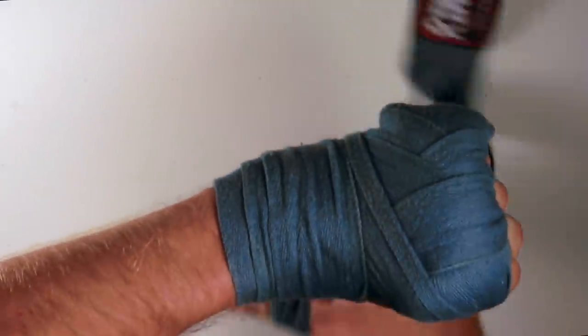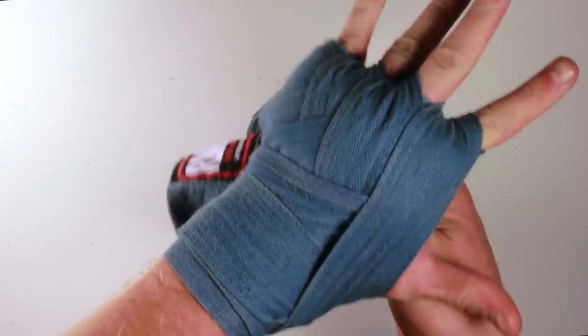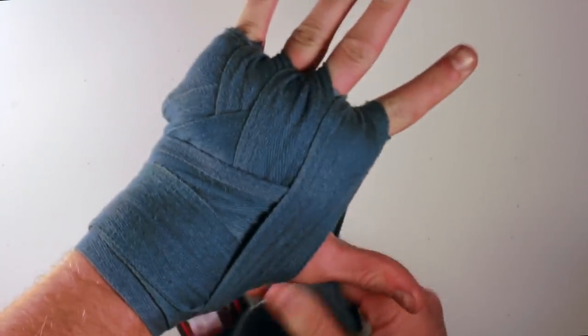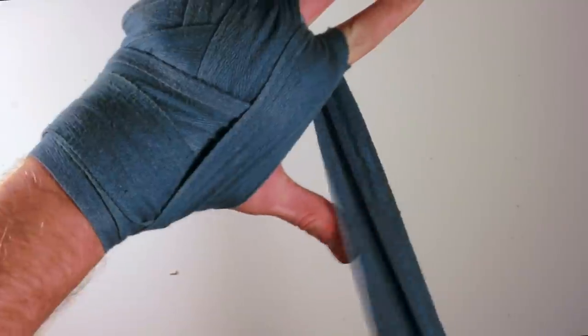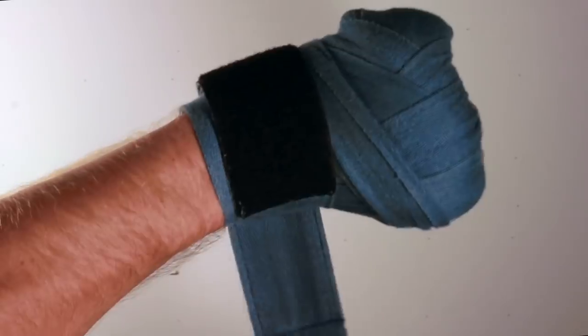And once we go around this wrist here, we're going to come back up to the last set of fingers, the middle and index. We're going to come across in between the index and thumb. I'm going to make that fist for one last final time. Come across the back of the hand, around the wrist to finish the hand wrapping.